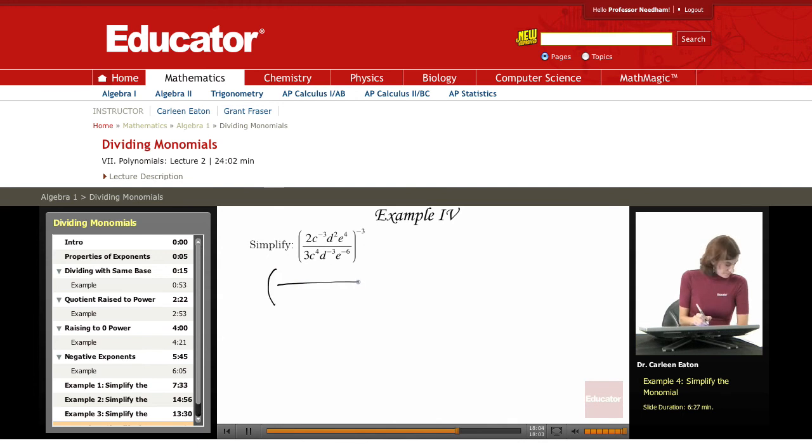Starting out, I have two thirds, C to the negative three minus four, then I have D squared minus negative three, E to the fourth minus negative six.